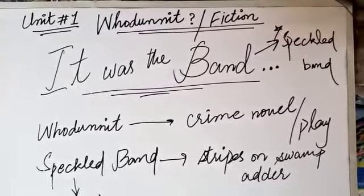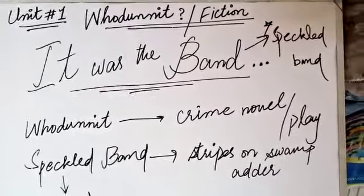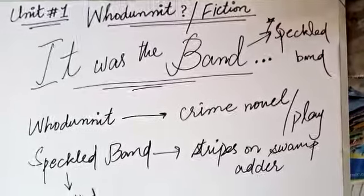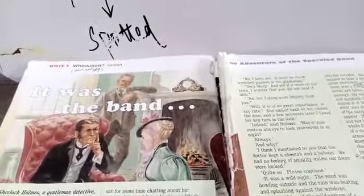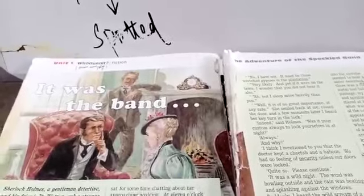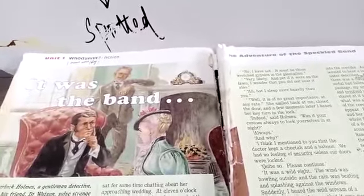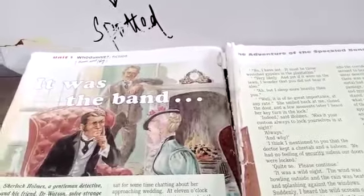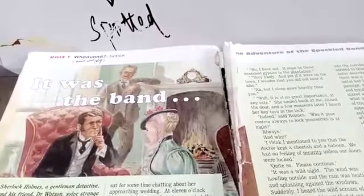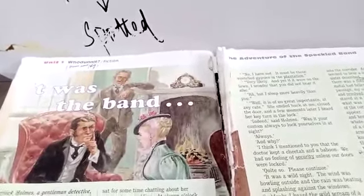The detective tries to find out about the murderer. If you see the title of the lesson, you may see Sherlock Holmes sitting in his usual style, detecting about the crime that is being done in the story. And Dr. Watson is standing behind him, a very loyal friend of Sherlock Holmes.